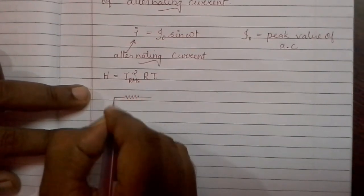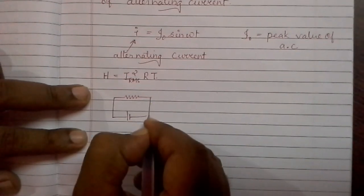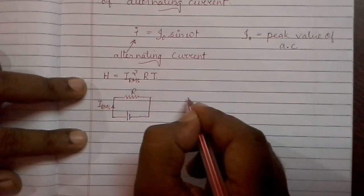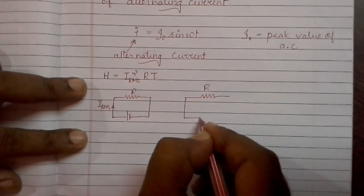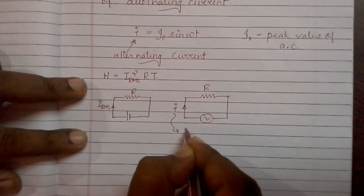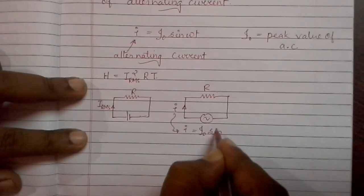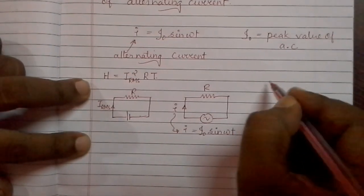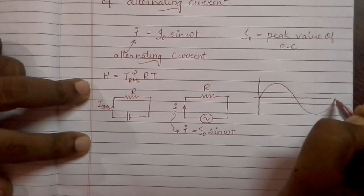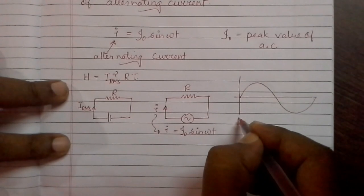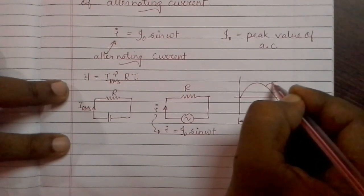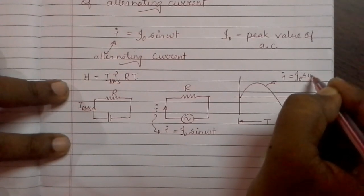This is the circuit diagram. We have the battery connected. I_rms is the current, and for alternating current for the same resistance R, the current is I, where I equals I₀ sin(ωt). For alternating current, this is the diagram for one complete cycle. So total time from here to here is T as the time period, and here I equals I₀ sin(ωt).